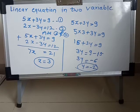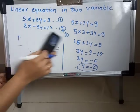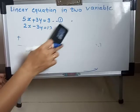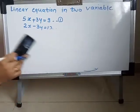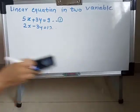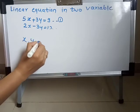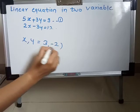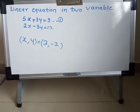Now complete this activity. The solution of both equations 5X plus 3Y equal to 9 and 2X minus 3Y equal to 12 is: X, Y is equal to 3, minus 2. This is our answer for the linear equation.